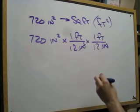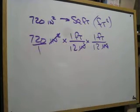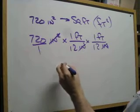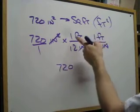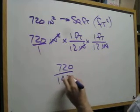Our inches cancel here, 2 of those inches cancel with both of these. Put that over 1 to remember to multiply the 720 times the numerators, 1 and 1. And then we multiply 12 times 12, which is 144.